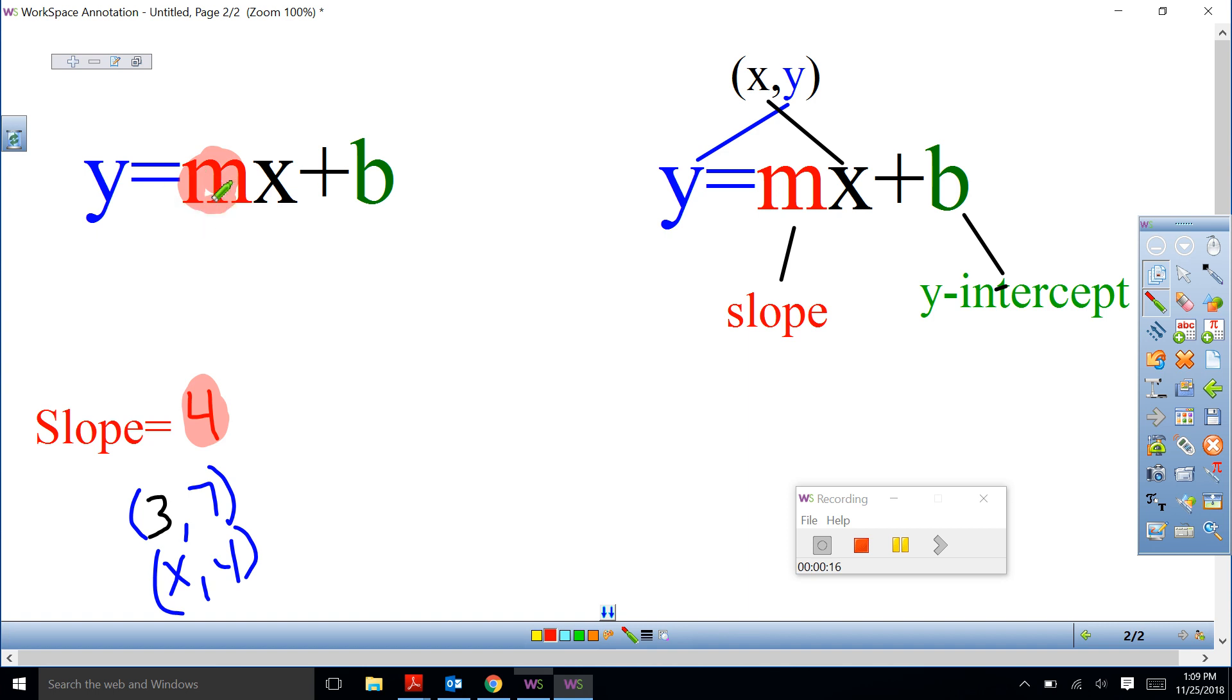They provide us with the X from a set of coordinates which goes in here, and the Y which goes right here.